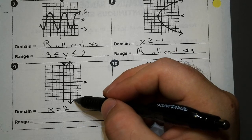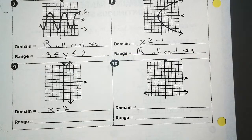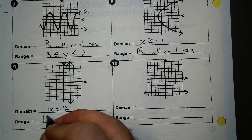Now for my y values, it keeps going down forever, it keeps going up forever. So our y values is going to be all real numbers.